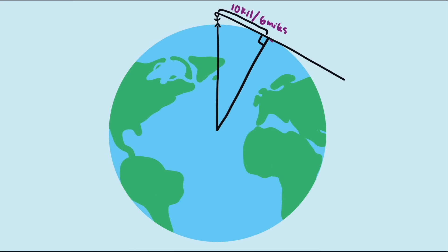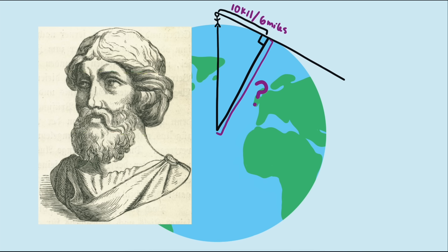How big would our planet need to be so that we could see much further? Say, maybe 10 kilometers, or about 6 miles. How big would the Earth be then? This is pretty easy mathematically. We just use our same Pythagorean equation as before, only now we have different knowns and different unknowns.